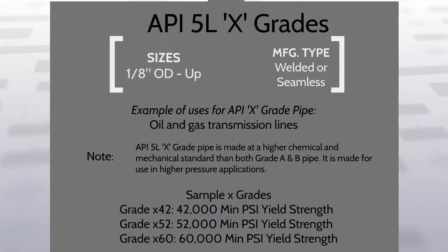API 5L X grades include 1-1/8 inch OD and up, welded or seamless pipe. It can be used for oil and gas transmission lines. API 5L X grade pipe is made at a higher chemical and mechanical standard than grade A and B pipe. It is made for use in higher pressure applications.